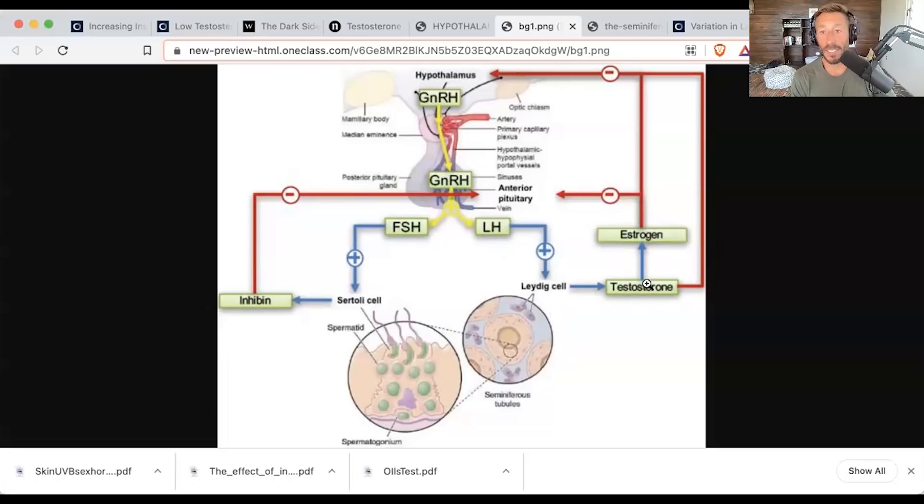You can see here in this graphic, the testosterone can be converted to estrogen and that all of these hormones, testosterone, estrogen, and inhibin produced by the Sertoli cells as a result of FSH, feed back negatively at different parts of the hypothalamic pituitary gonadal axis. This is how many hormones work. If they are high, they feed back, and you can see the releasing hormones or the precursor hormones going down so that the body has this natural balance.